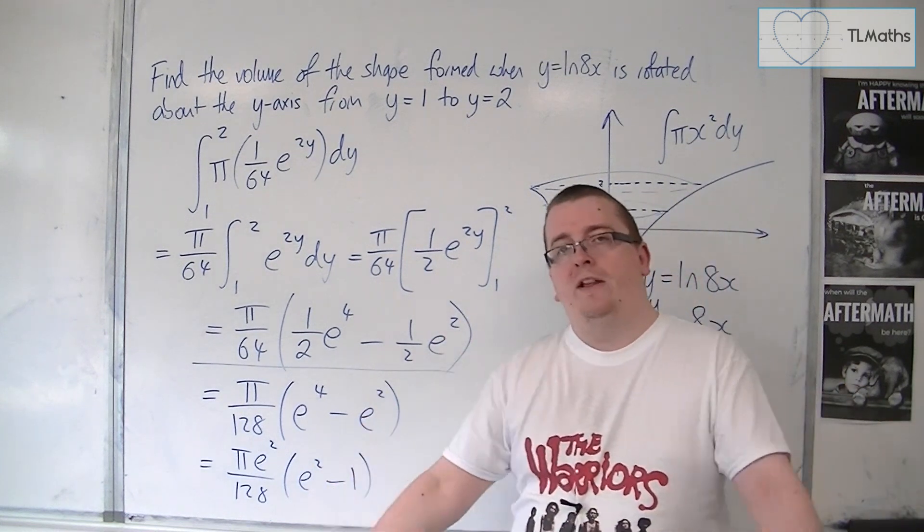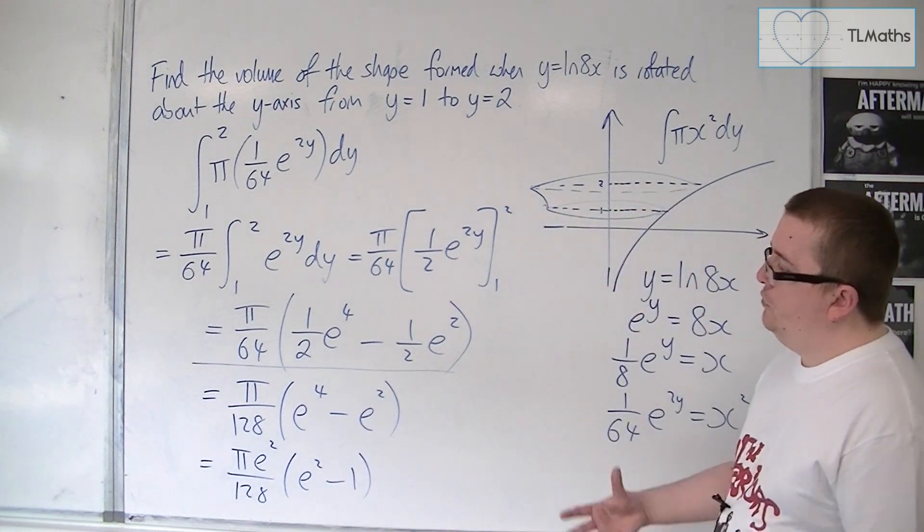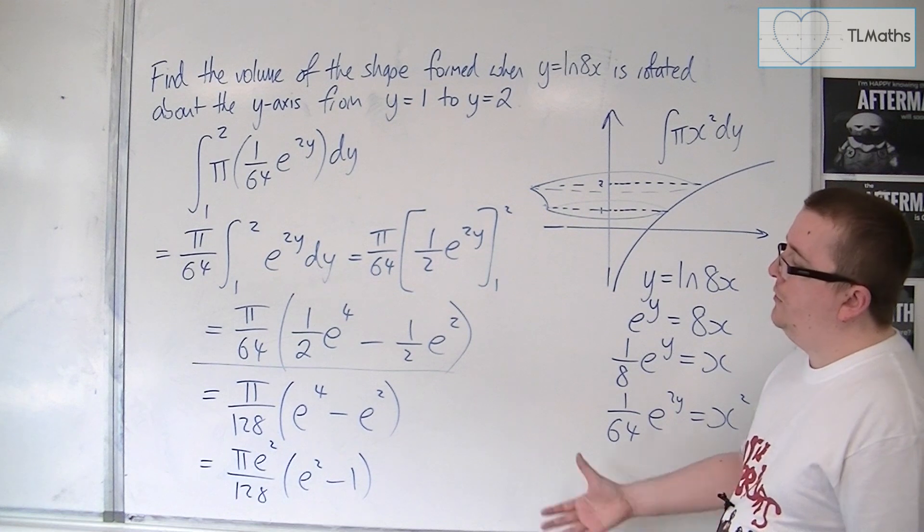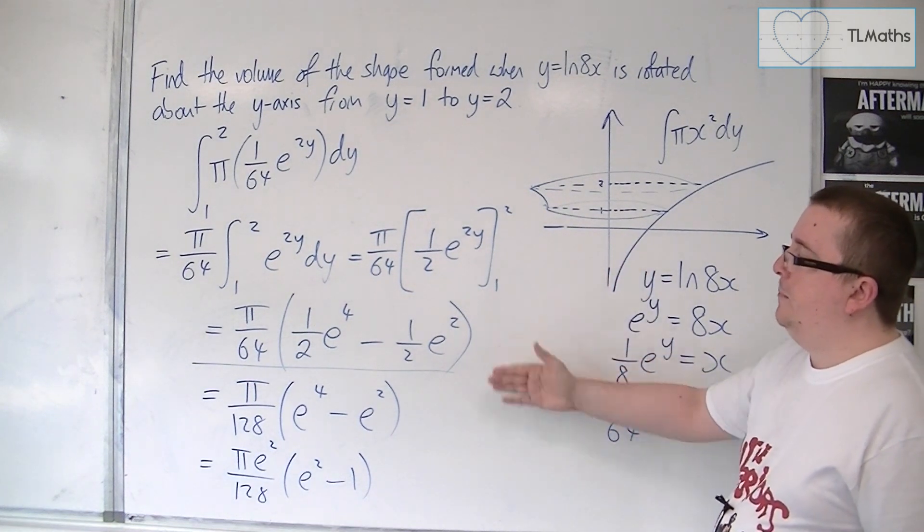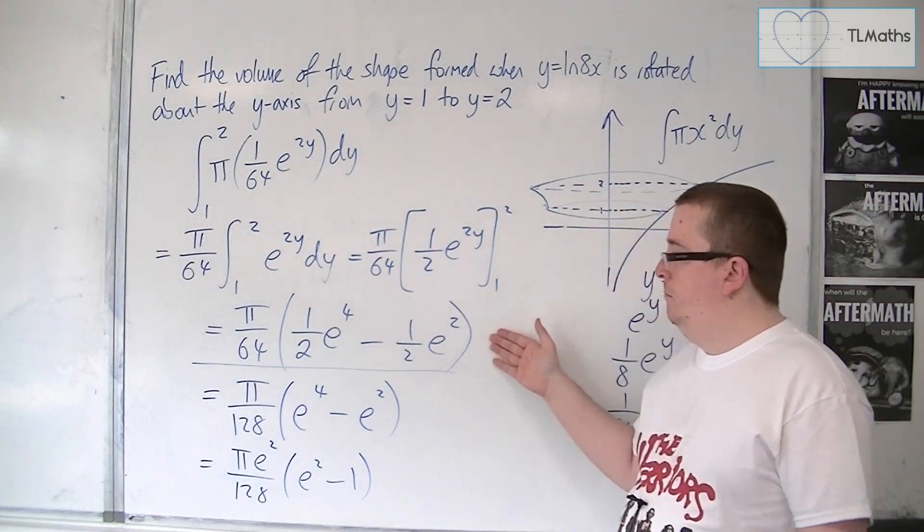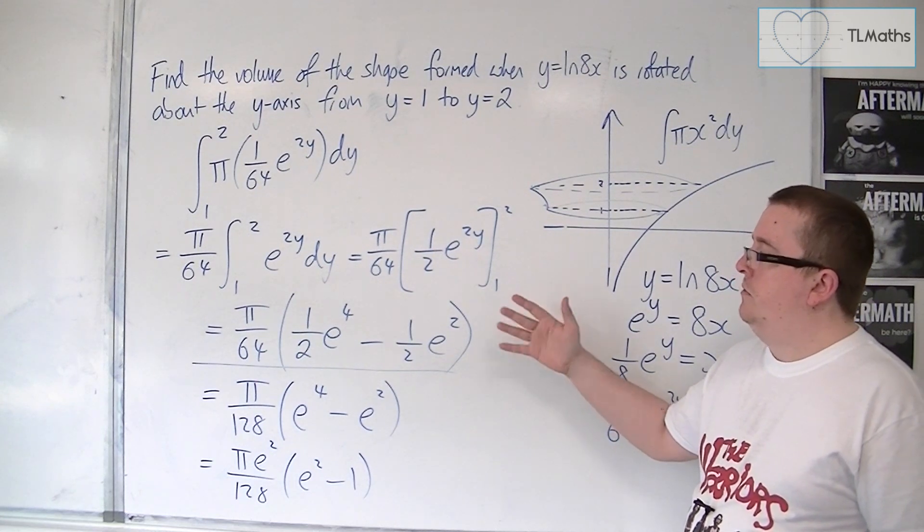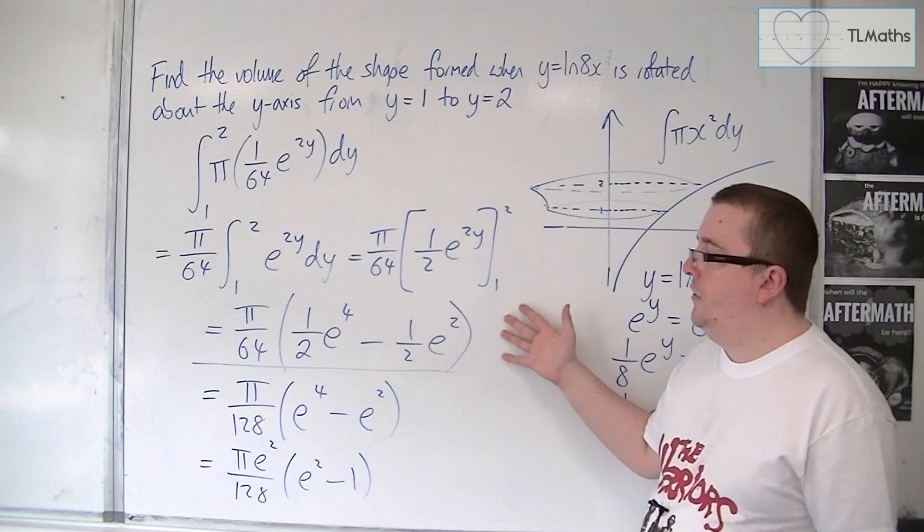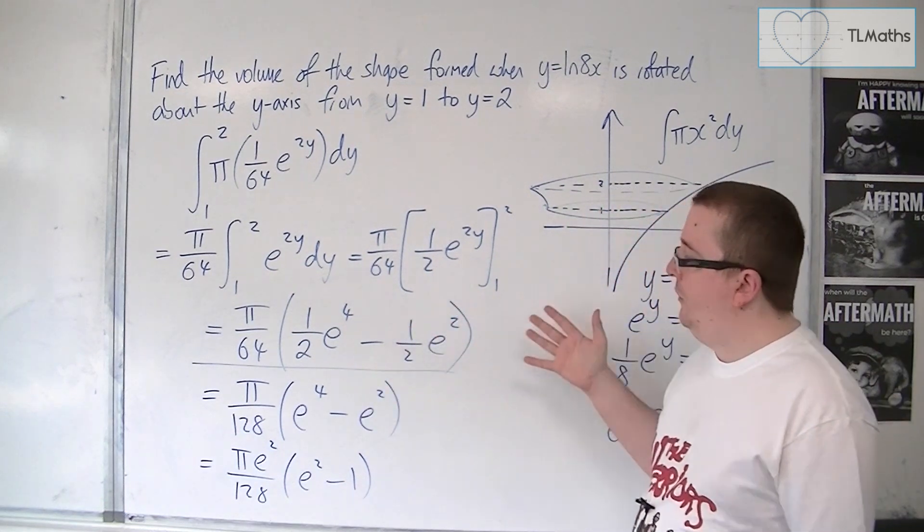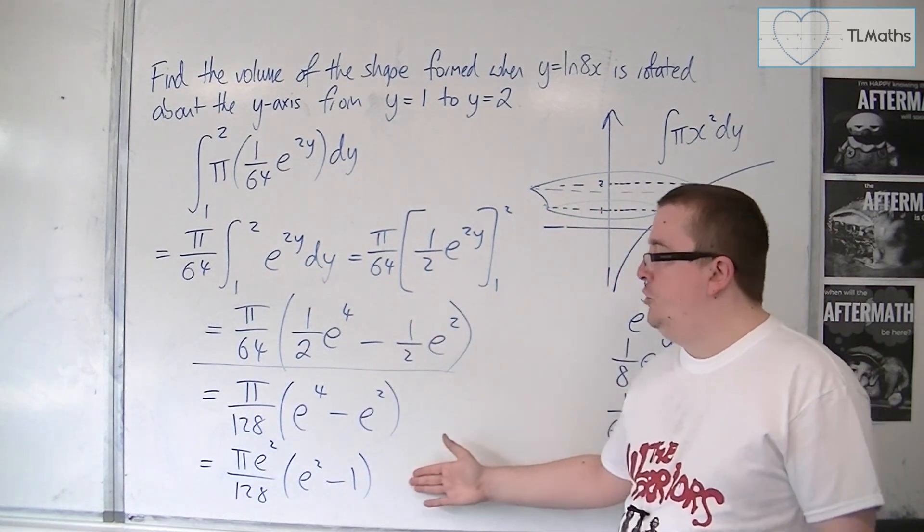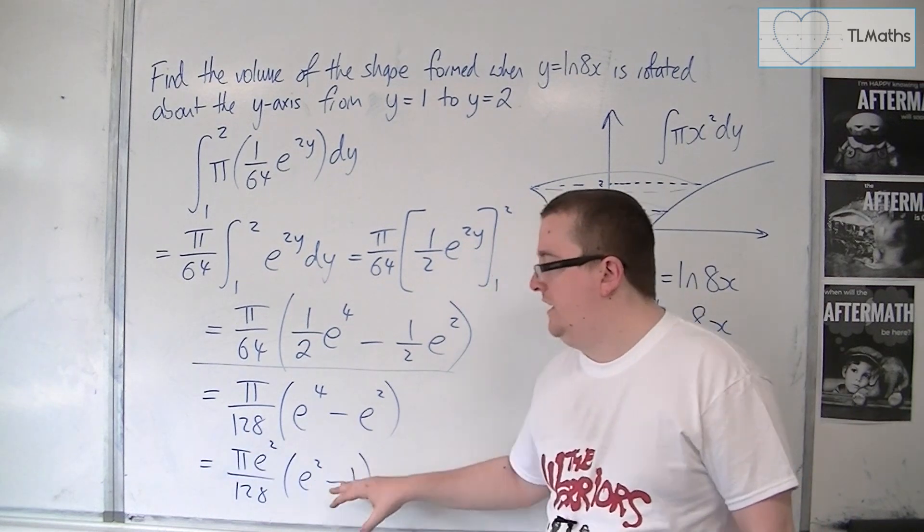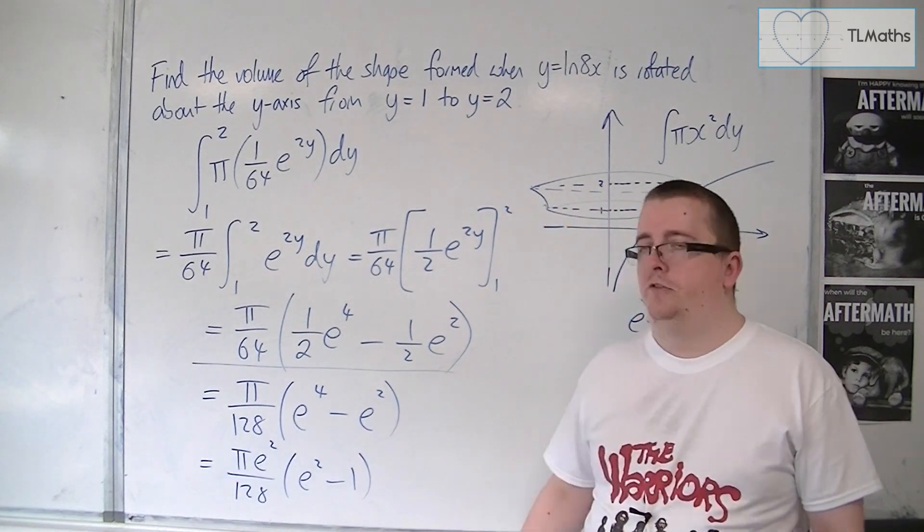But in the grand scheme of things, if it was just asking you to find the exact value, then that would likely be perfect. It's the correct answer, but it's not in as simple form as possible, but that's fine. But if they wanted you to write it with something e to the 2 minus 1, then that's how you'd factor it out.